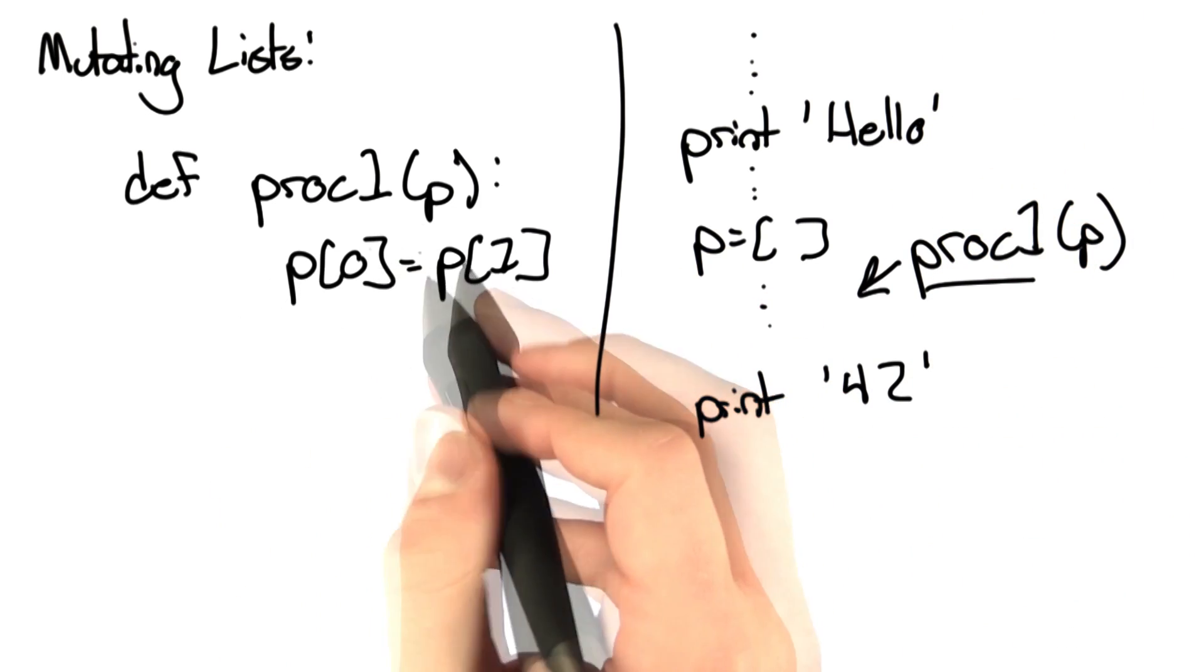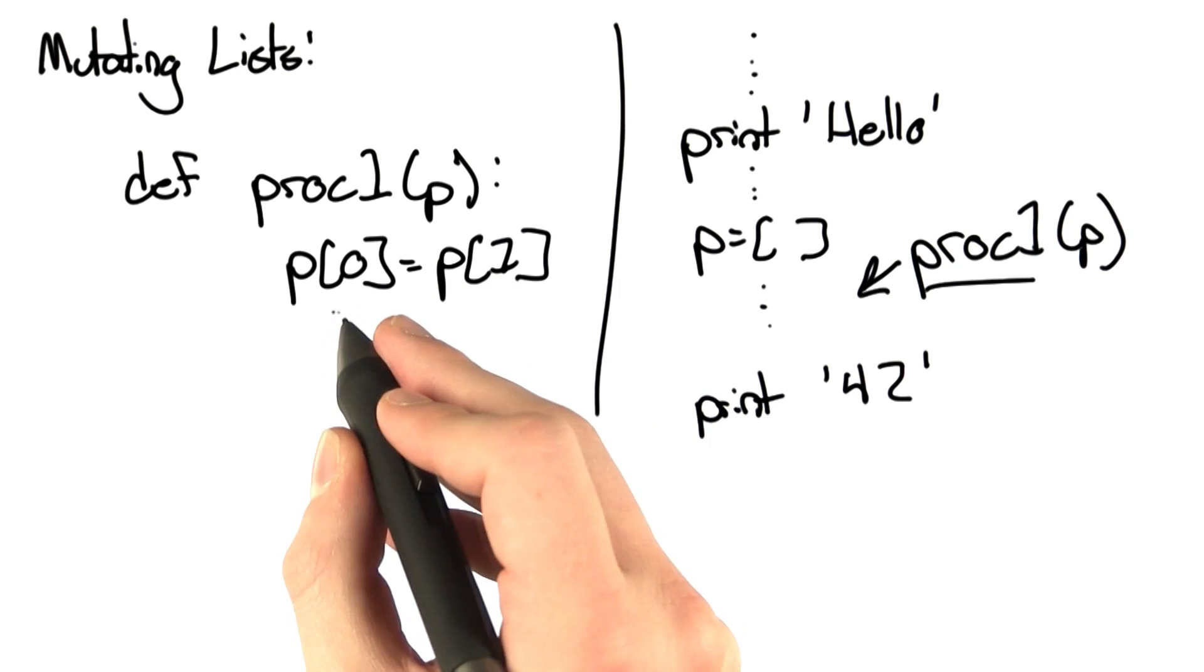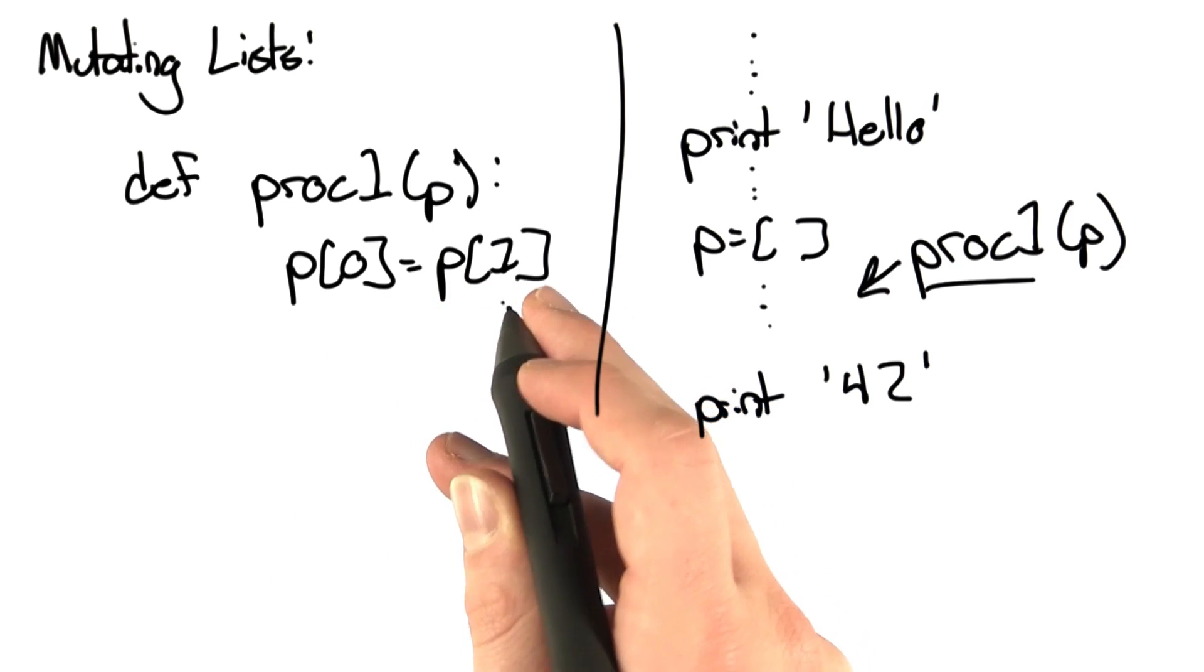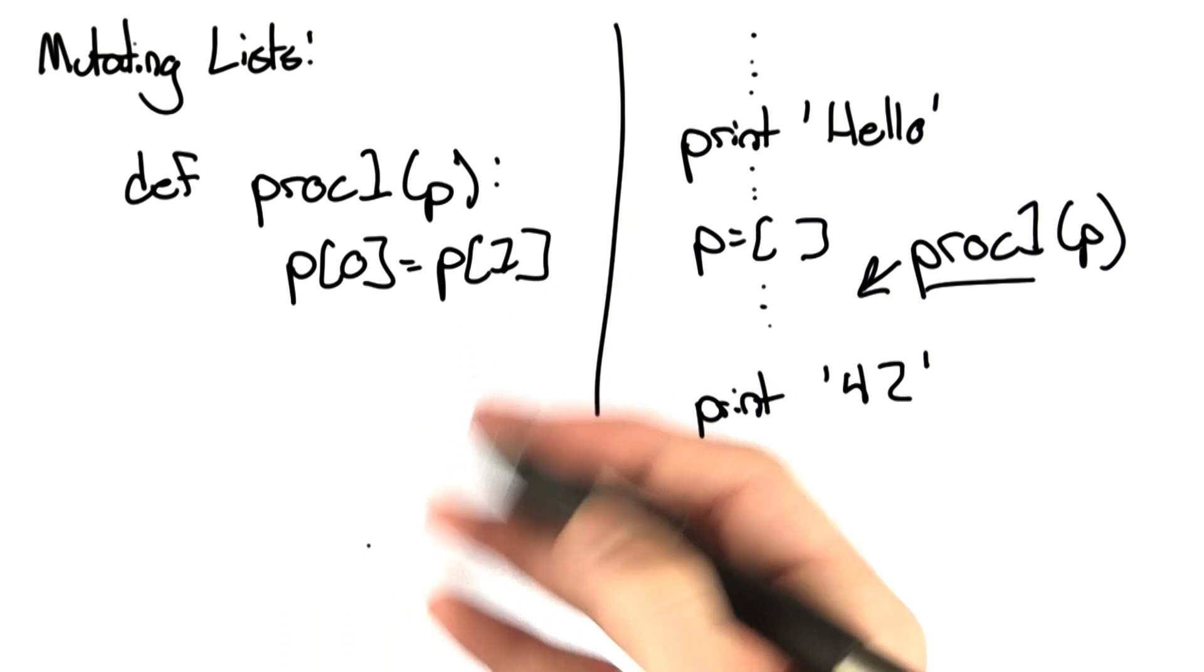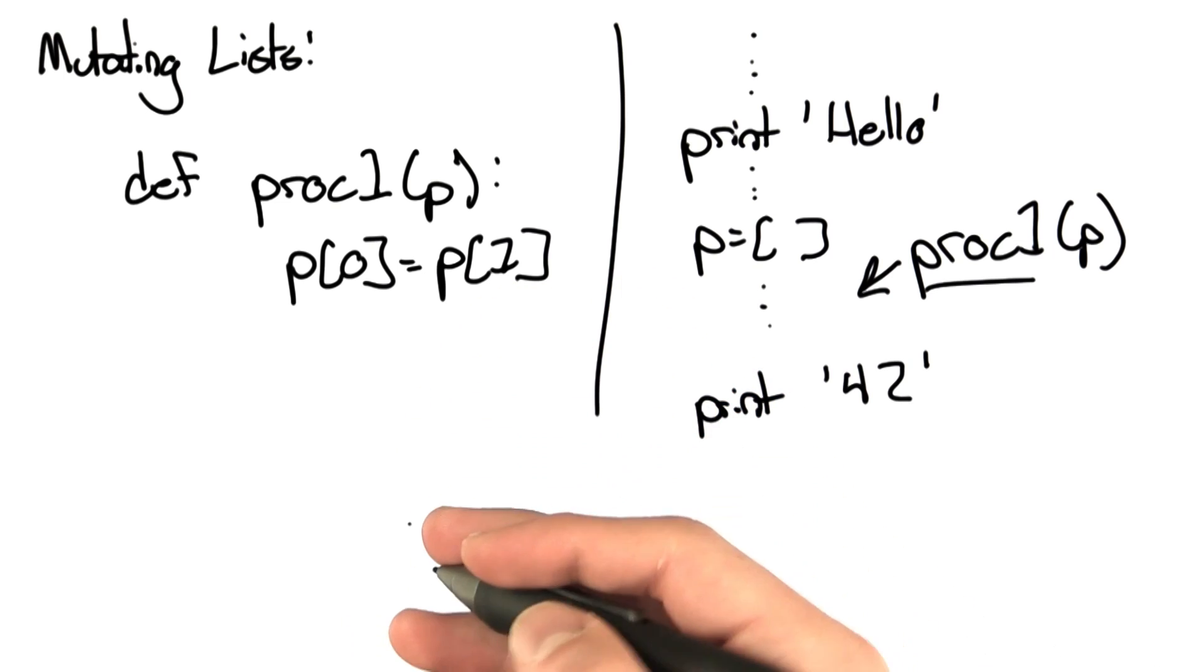In this first procedure, there's only one line. And we set the first value of p to equal its second value. This is going to change the elements in p.